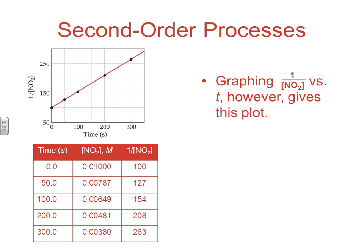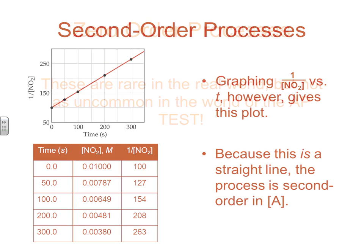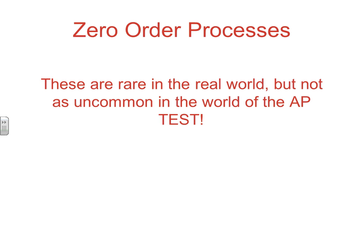You go through that sequence: concentration versus time, natural log versus time, and then reciprocal versus time. Whichever gives you the linear relationship tells you the order of the process and shows you how to find your k value. Since it's the reciprocal that gives a straight line, we know it's second order with respect to A.